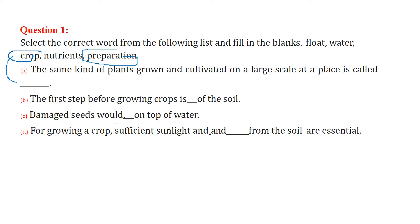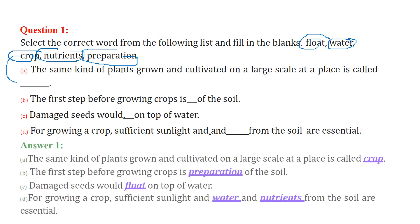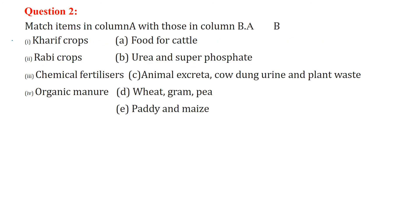A damaged seed would float on top of water. For growing a crop, sufficient sunlight, water, and nutrients from the soil are essential. So these are the answers for the fill in the blanks.